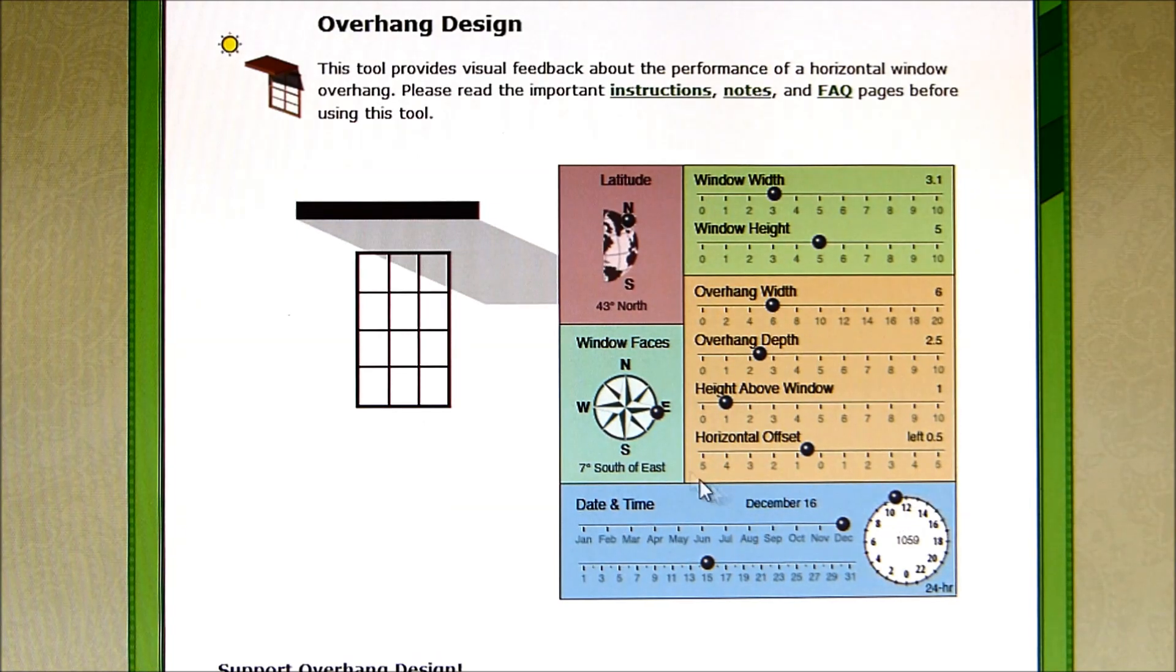This will help you plan how wide you want the windows to be, the window height, the overhang depth, and the height above the window—so where you want the windows to fall on the wall.